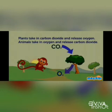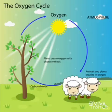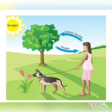During respiration, plants aur animals jo carbon dioxide release karta hai, wo plants photosynthesis mein use kar leta hai. Aur photosynthesis mein jo oxygen produce ho raha hai, wo plants aur animals dono respiration ke liye use karta hai. This shows the interdependence of plants and animals. Aur isi tarha se plants aur animals ek dusare ko help karta hai, aur saath mein oxygen aur carbon dioxide ka balance bhi atmosphere mein maintain ho jata hai.